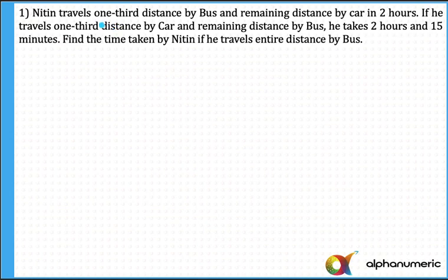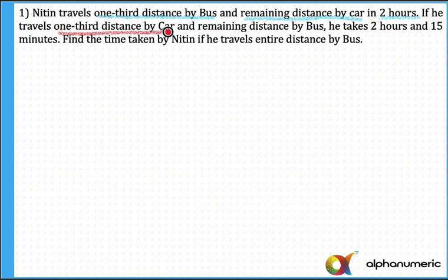It says Nitin travels one-third of the distance by bus and the remaining distance by car, and the total time taken is two hours — so one-third by bus and two-thirds by car in two hours. If he travels one-third distance by car and the remaining distance by bus, the distance has been interchanged, and he takes two hours and 15 minutes — so he is taking 15 minutes extra.